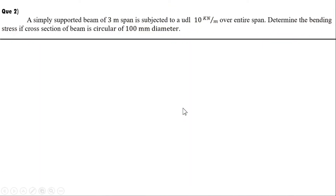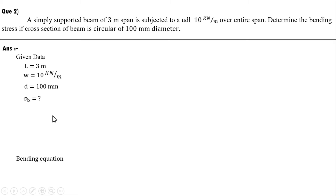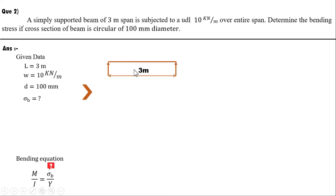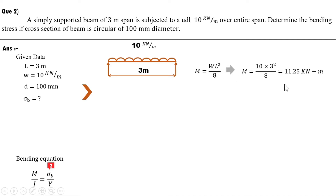Problem 2 has a different cross section and beam condition. Using M/I = σ_b/y, for a simply supported beam of 3 m span with a UDL of 10 kN/m, the maximum bending moment formula is WL²/8. Putting in the values, maximum bending moment = 11.25 kN·m.